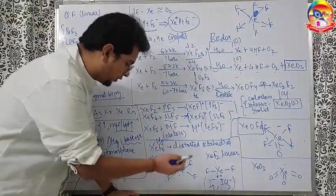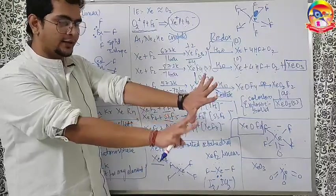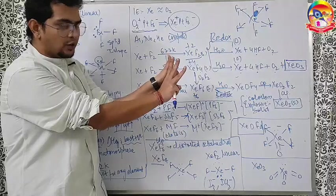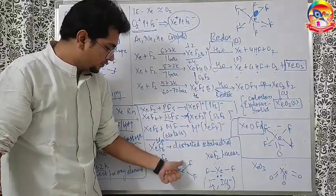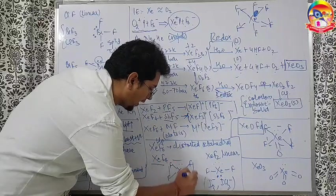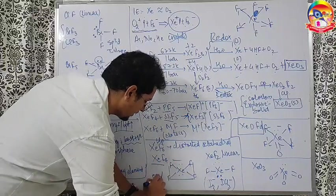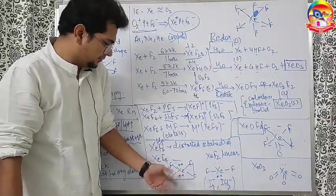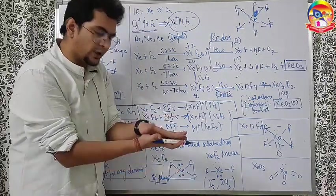Going ahead, XeF4, you might have known, because xenon has 8 electrons in the last shell. 4 fluorine means 4 bonds made, 4 electrons left, that means 2 lone pairs left. So, 2 lone pair and 4 sigma bonds. Clear cut square planar structure will come here. You can understand, these 2 lone pair are like battatala. So it is square planar.